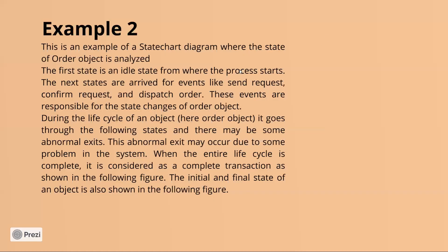This is example number two, in which you have to create a state chart diagram — a state transition diagram — for an order object. The first state is obviously an idle state. We will see where the process starts in the state transition diagram.